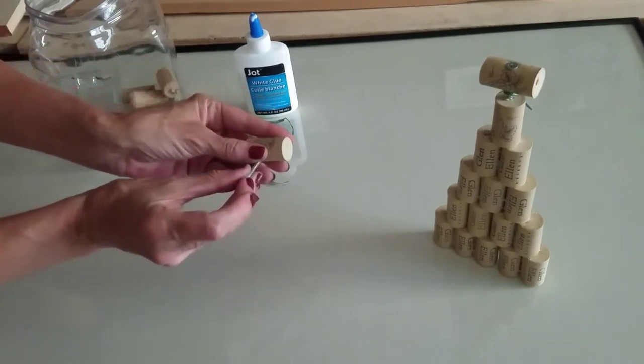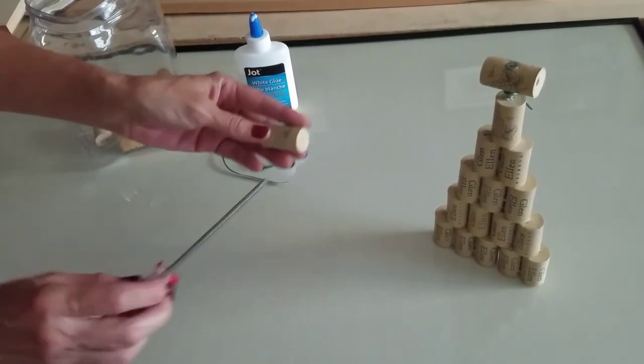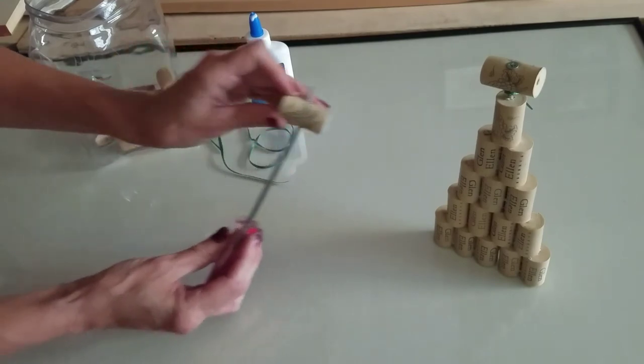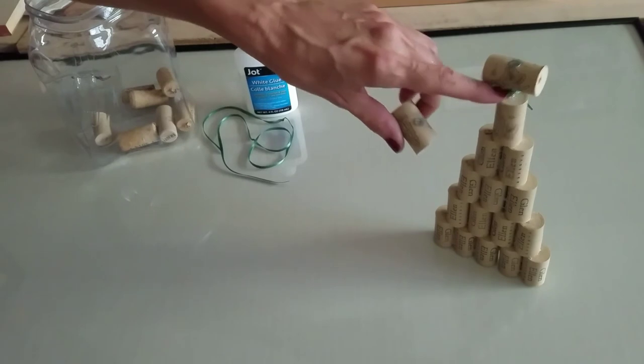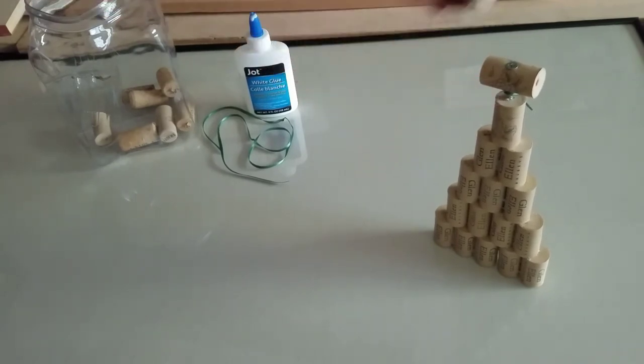I took a screw and I just screwed it through the center of the cork until it came out the other side. And then there was already a hole in this top cork because of the corkscrew that originally took the cork out of the wine bottle.